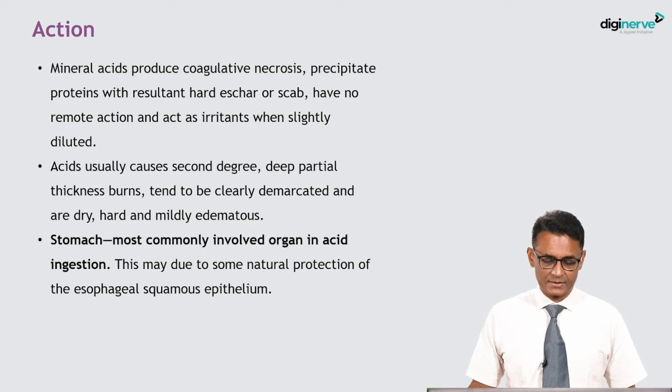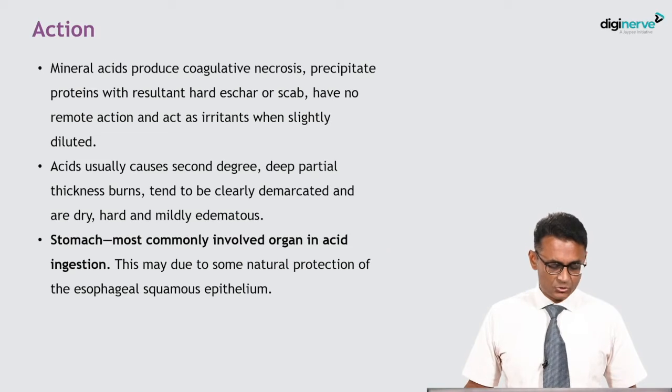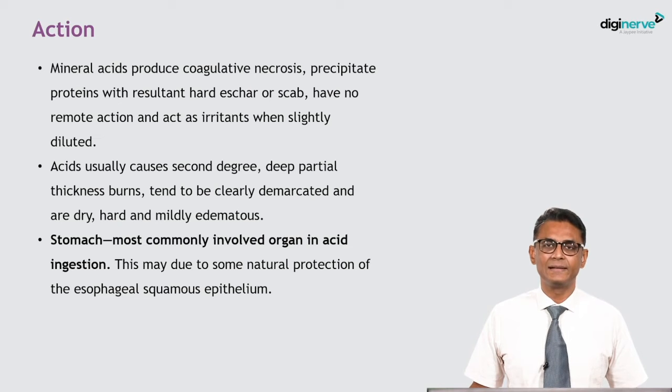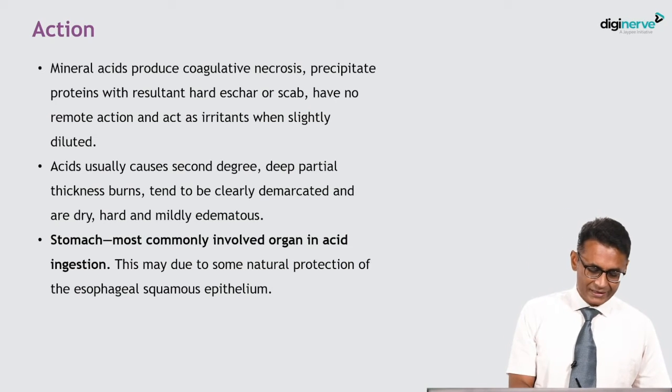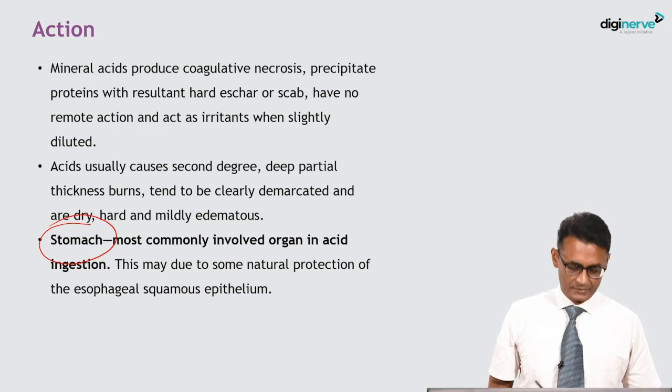Now, how does it act on the body? Mineral acids produce coagulative necrosis, precipitate proteins with resultant hard eschar or scab, have no remote action, and act as irritants when slightly diluted. Acids usually cause second-degree deep partial thickness burns that tend to be clearly demarcated, dry, hard, and mildly edematous. The stomach is the most commonly involved organ in acid ingestion, due to some natural protection of the oesophageal squamous epithelium.